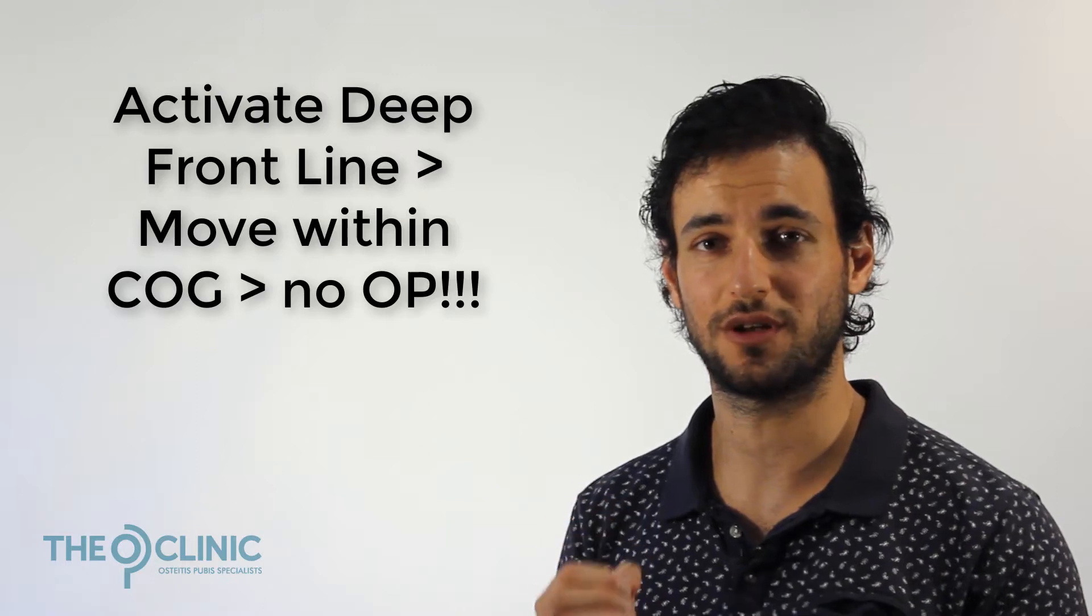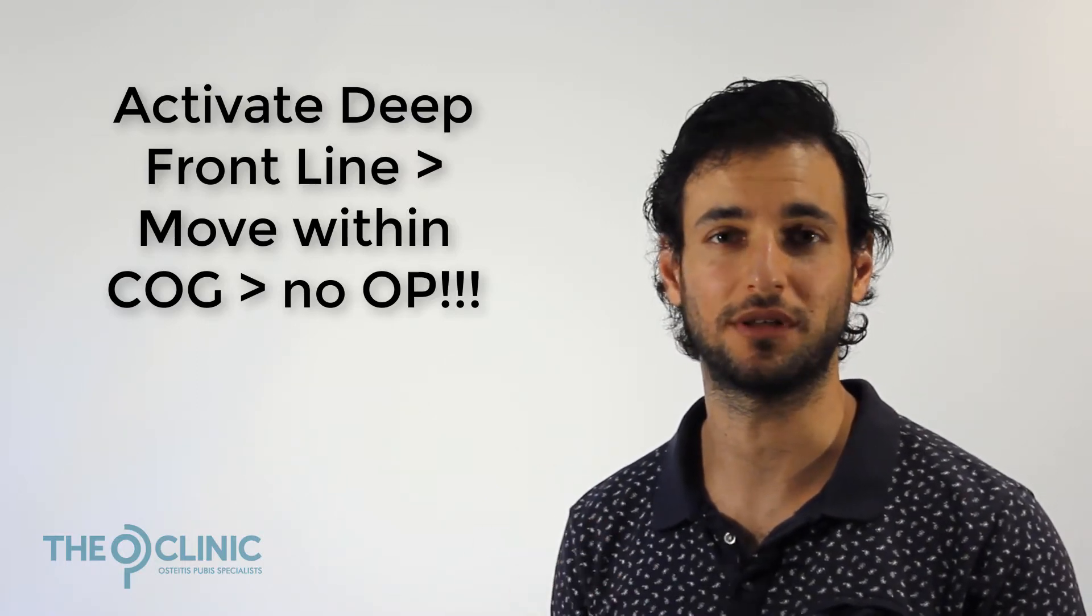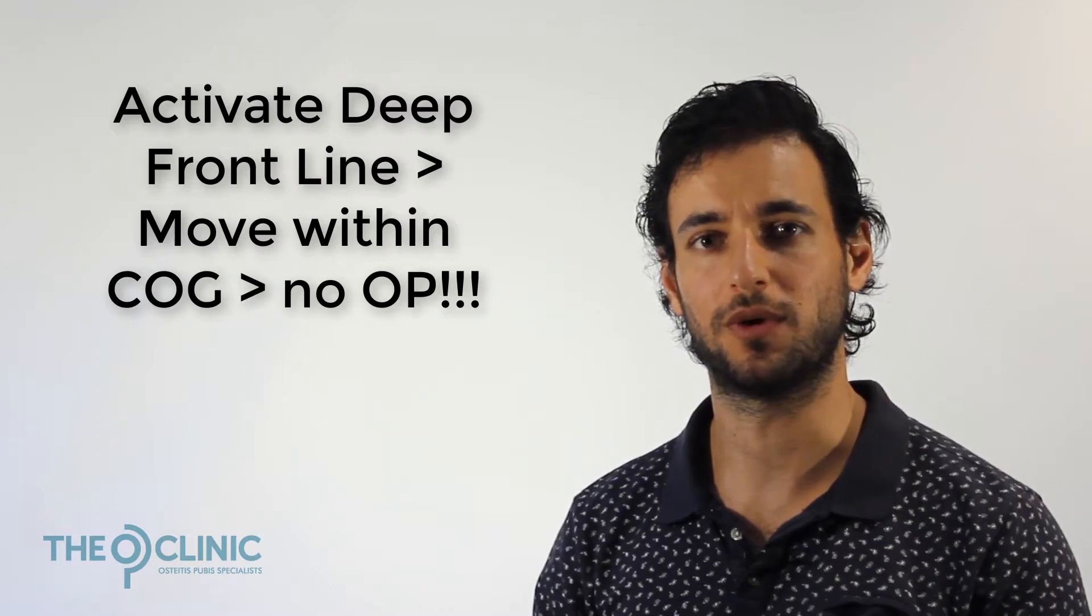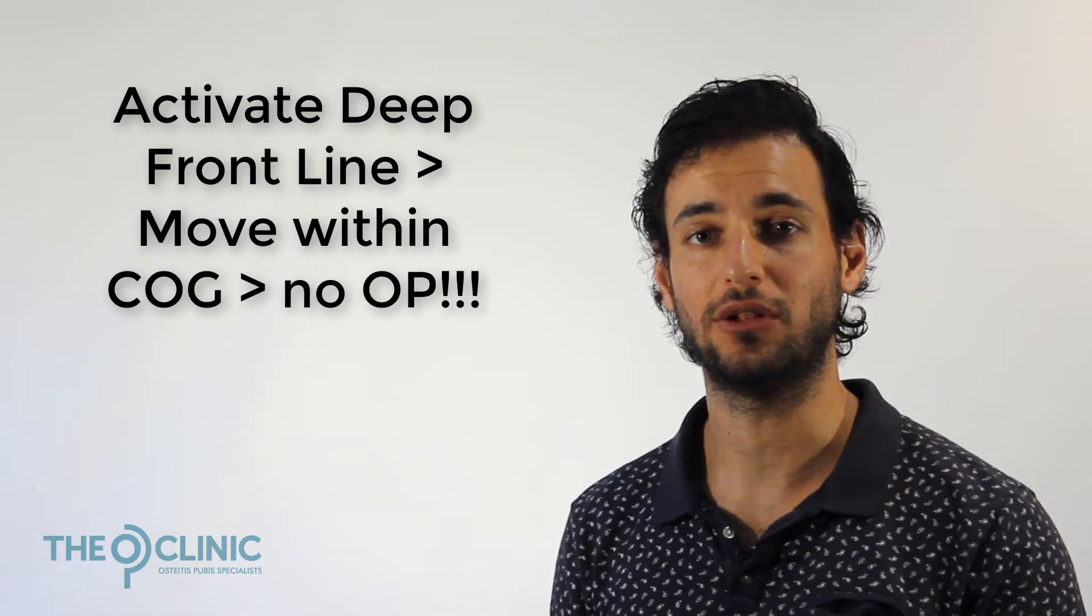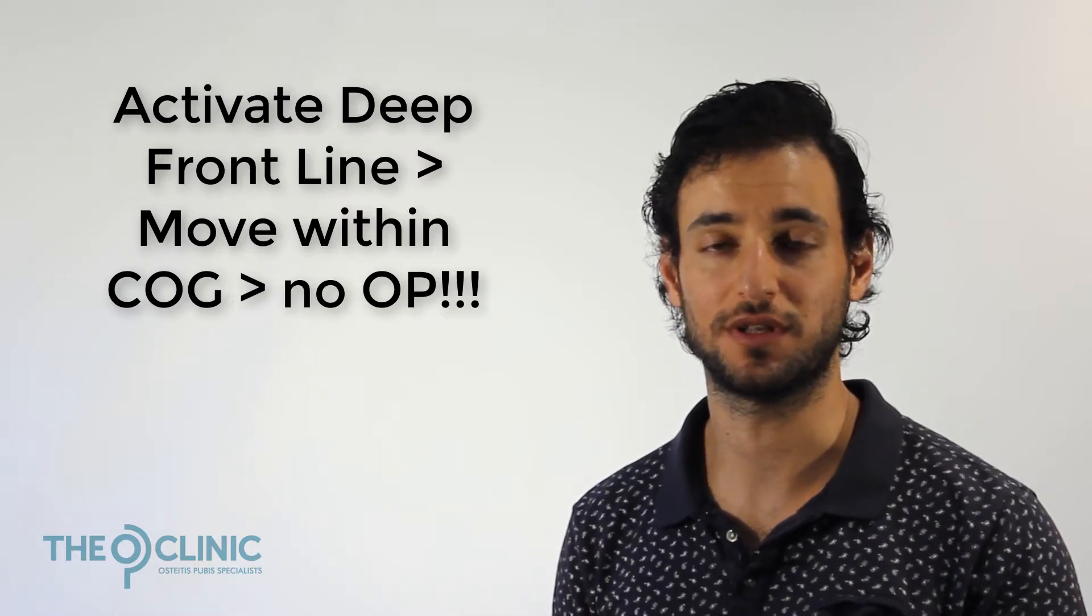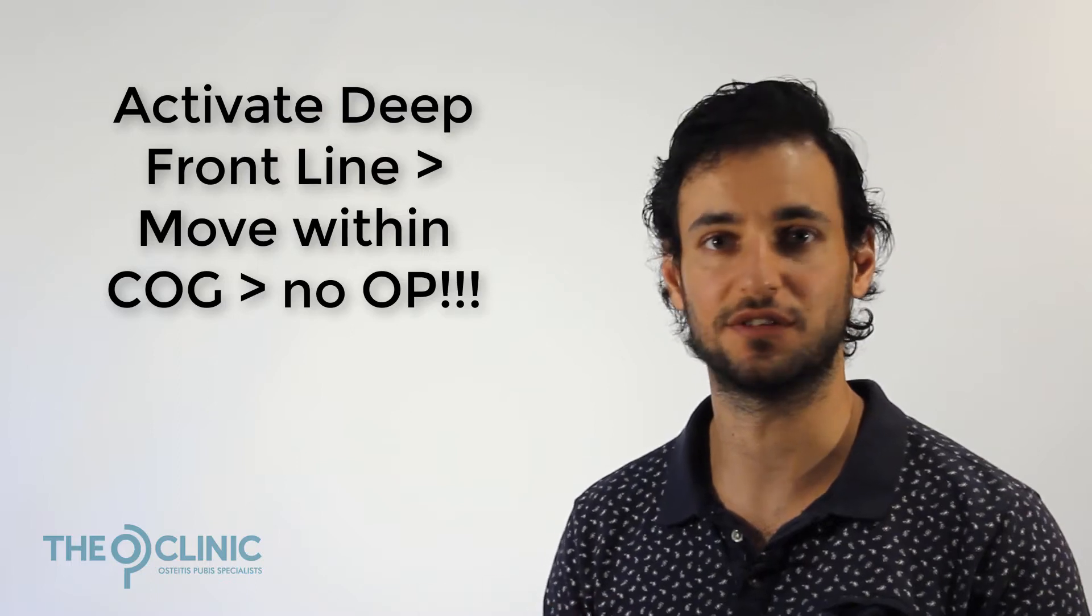In previous videos, we've discussed the deep front line and how when it's active, you're able to move within your center of gravity and keep load evenly distributed across your entire body. We also discussed that when your DFL isn't active and when it's weak and dysfunctional, how load can get stuck in specific joints, such as in the case of OP, your hips and adductors, which can lead to dysfunction and pain.